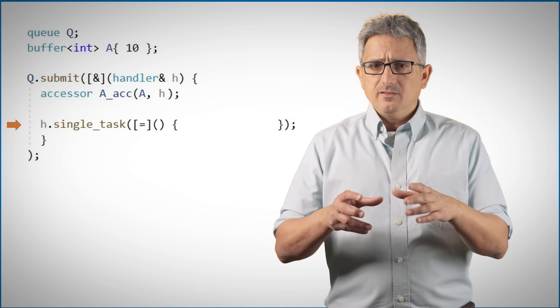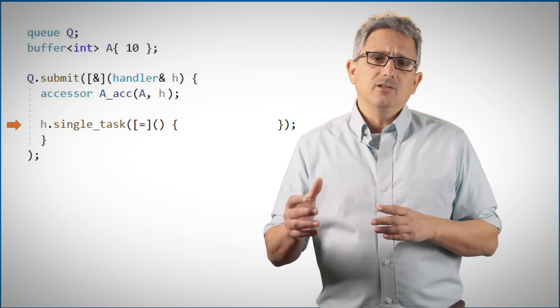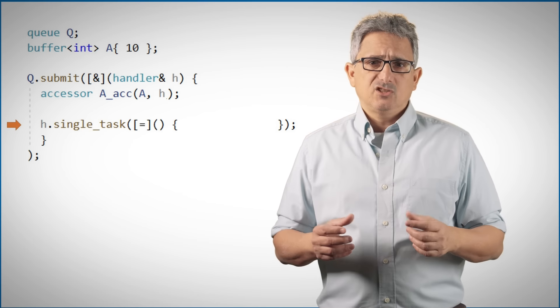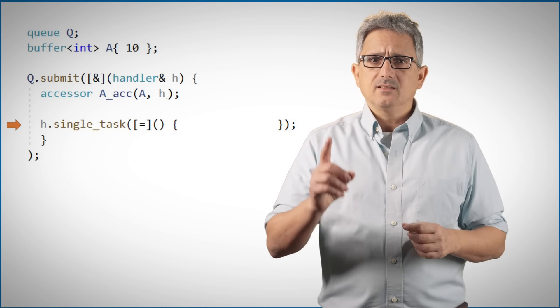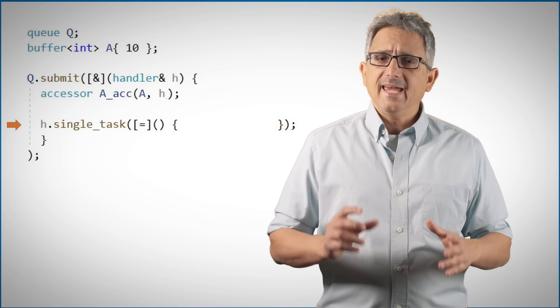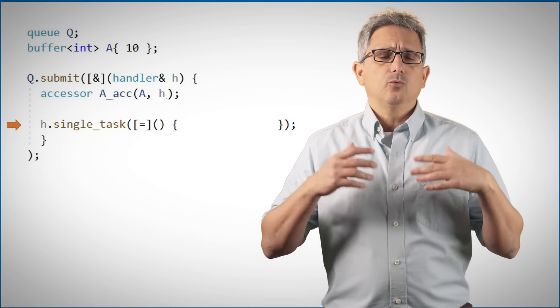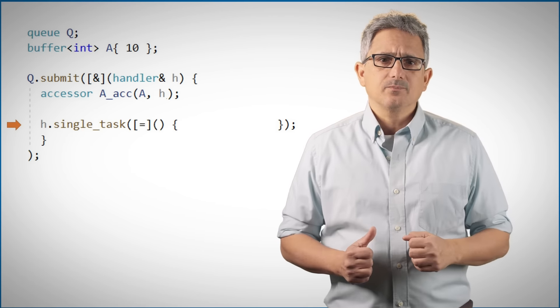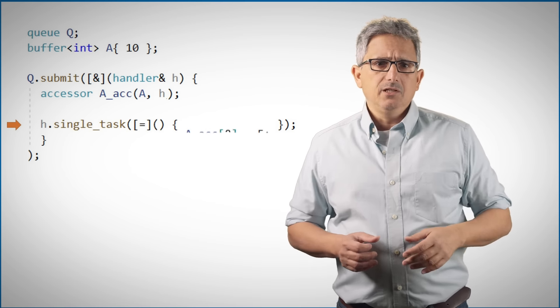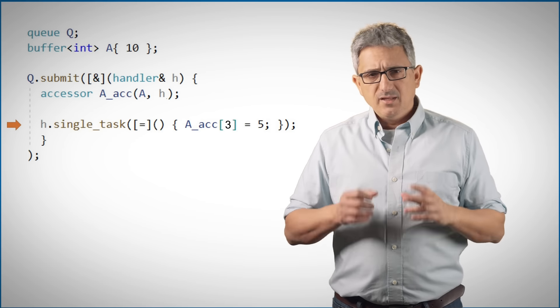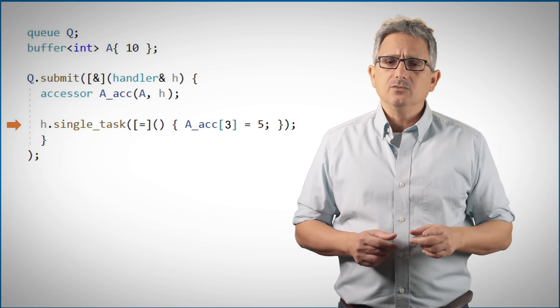And now we're using the handler to dispatch some work. Here it is a single task, so only a single instance of this function will be executed on the device. I'll show you in a minute how to run multiple parallel tasks. And I'm doing something here, I'm assigning 5 to the accessor's 3rd entry. This line will be executed on the device.